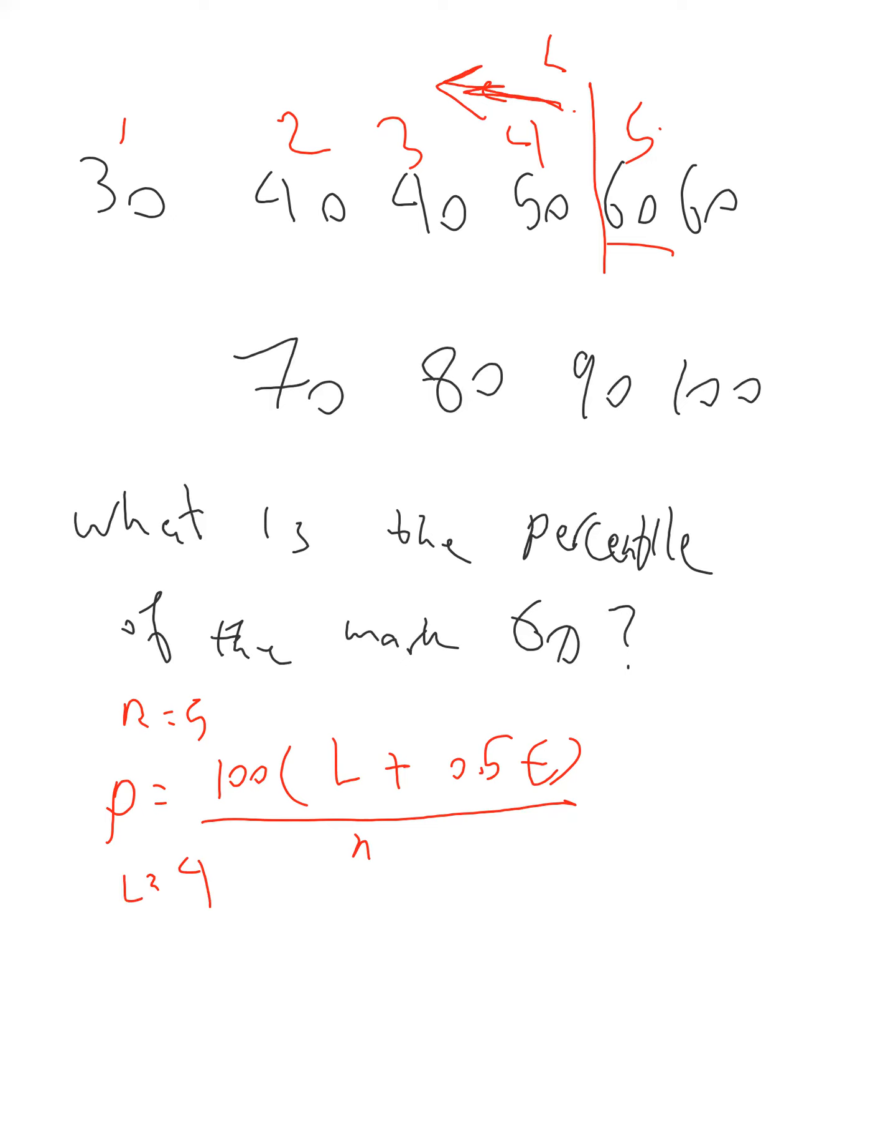What is our E? Is the number of data equal to the data point. So how many marks of the 60 do we have here? 2. So E would be 2. Because we have 2 of this data point, which is of interest for us, which is 60.